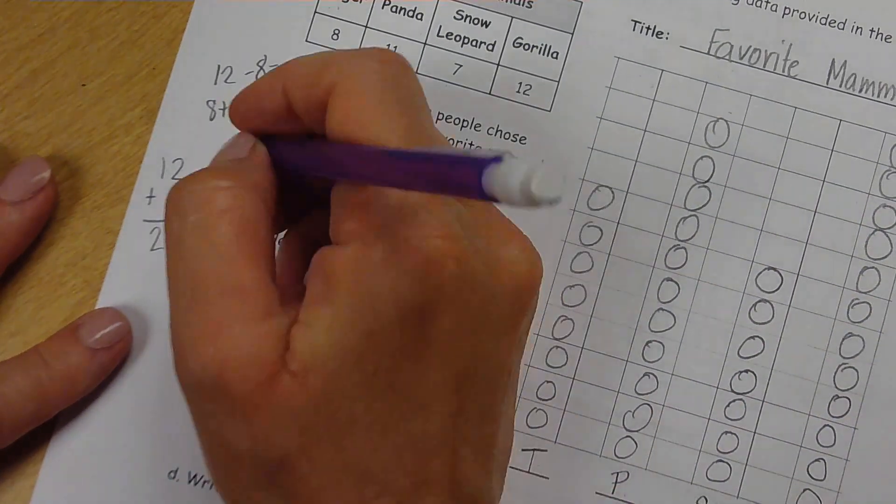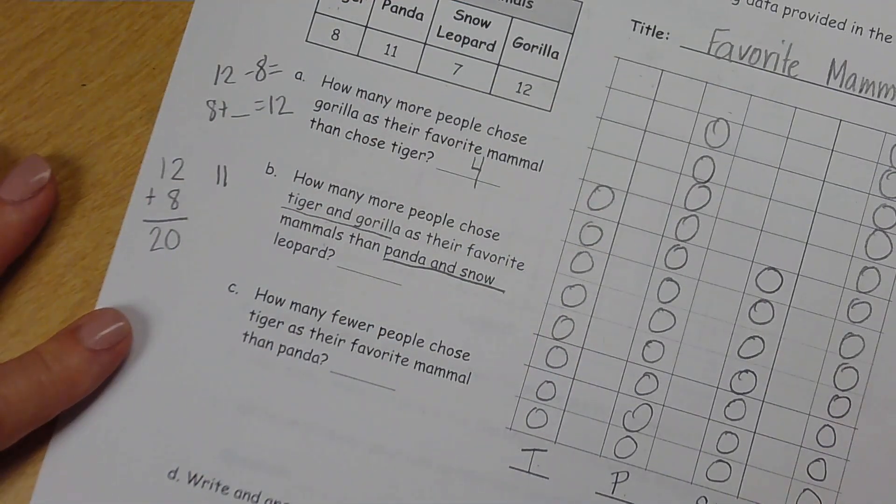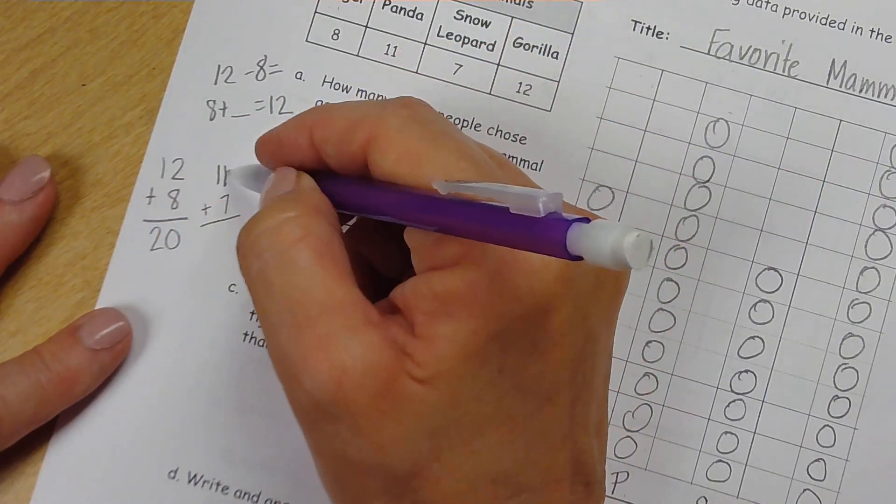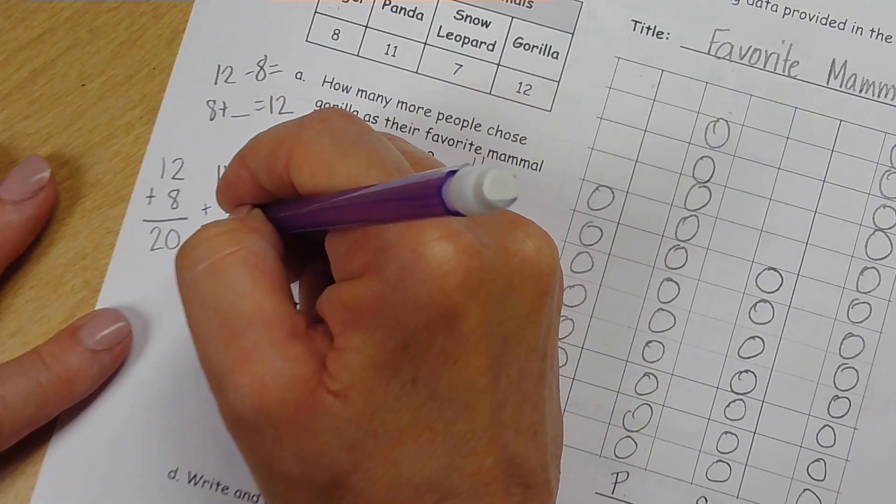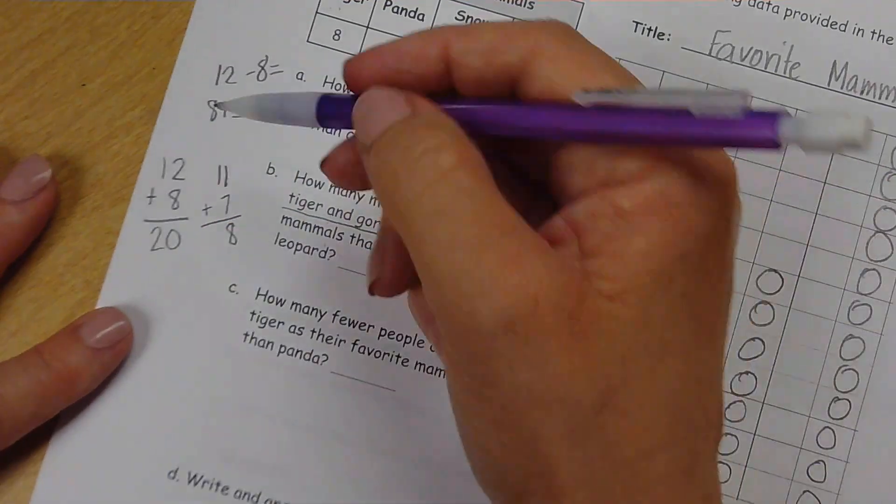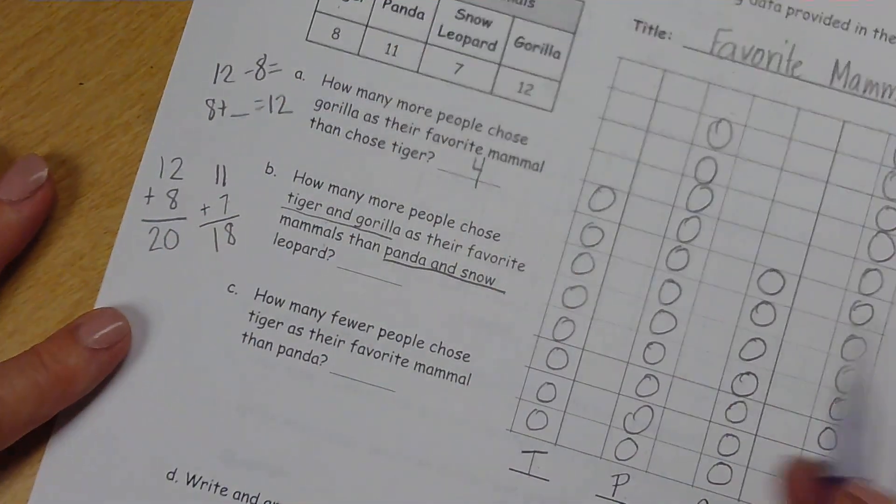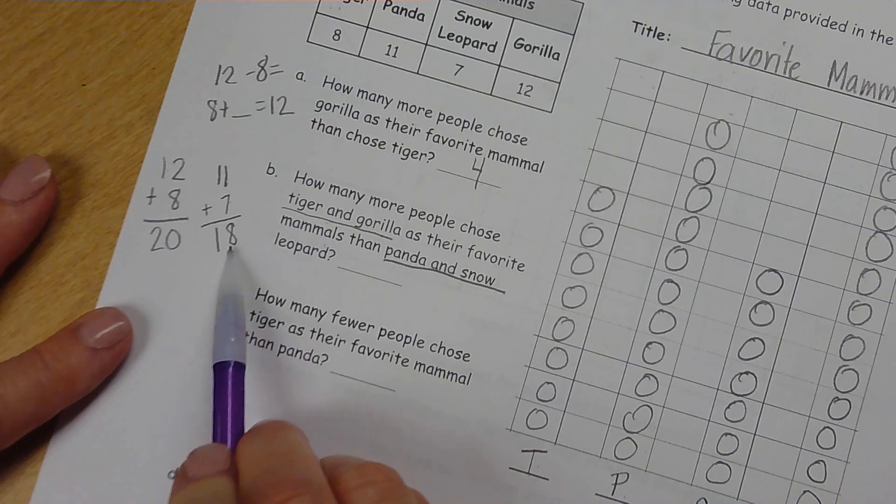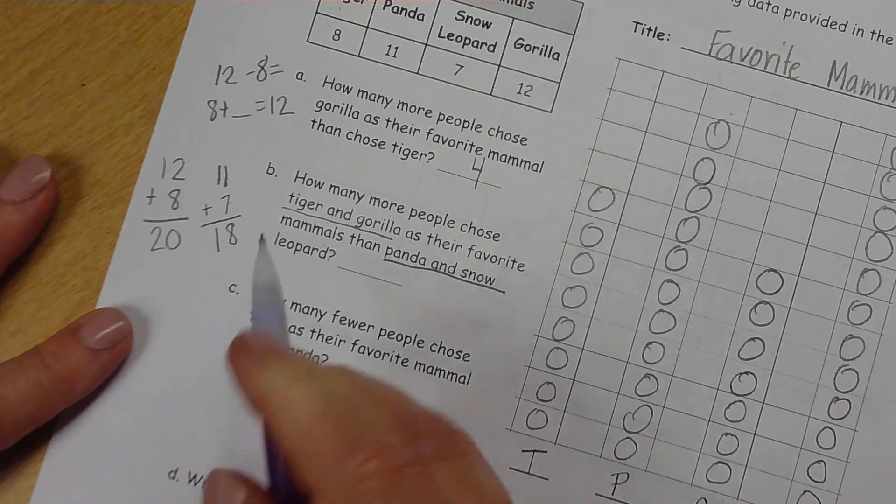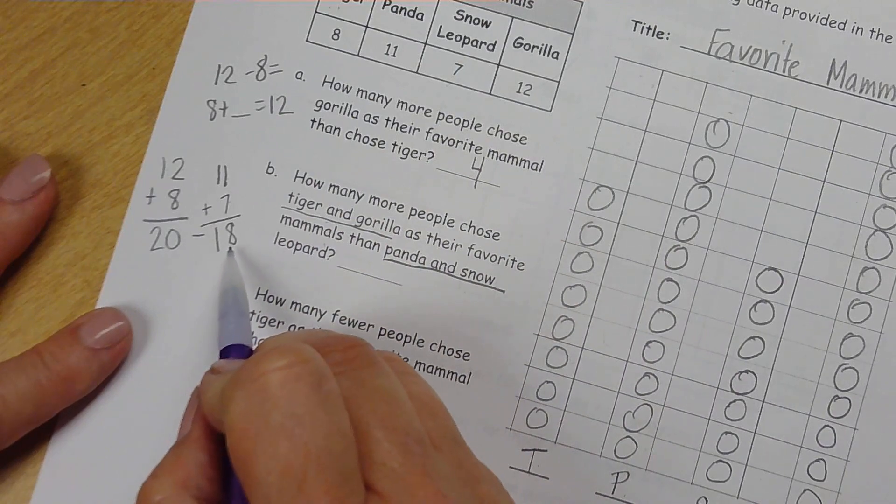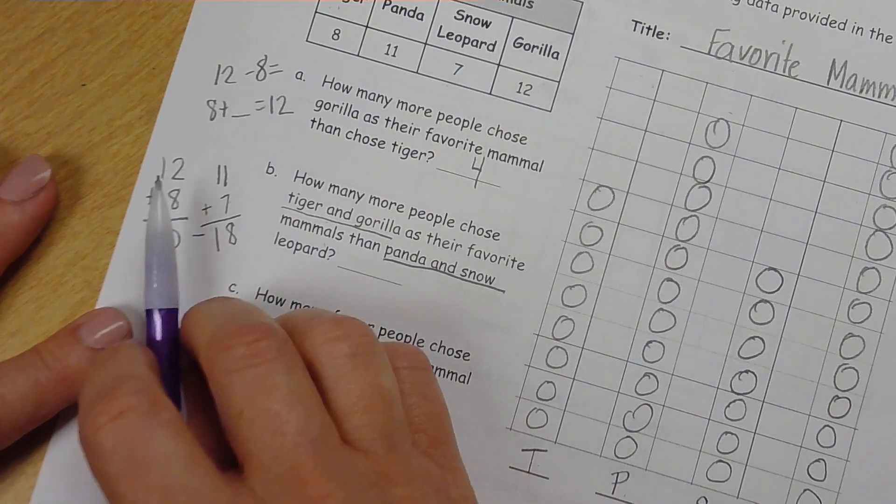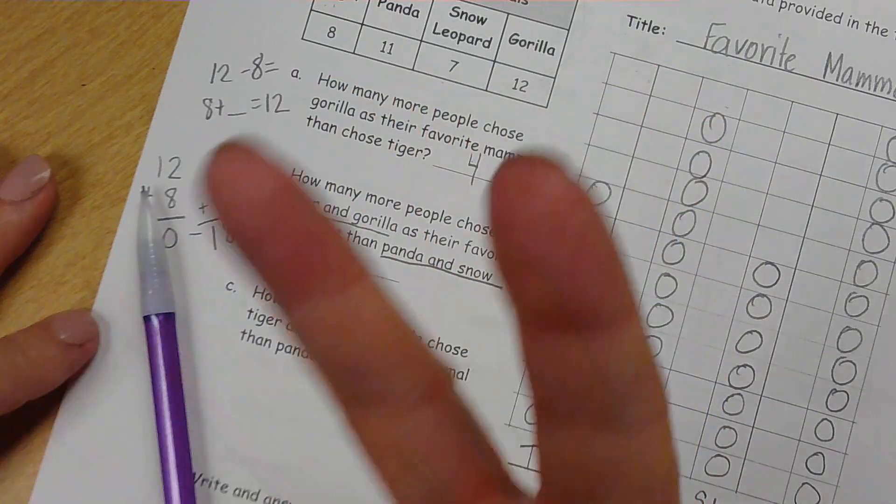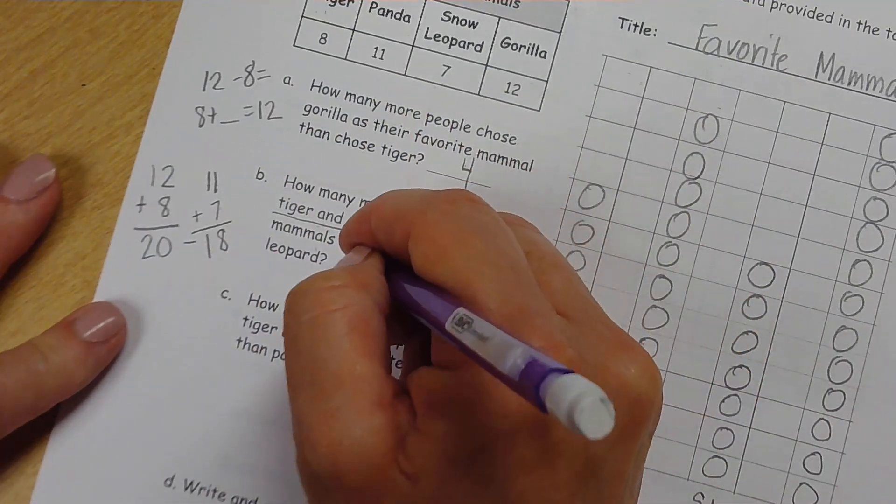Panda had 11 and snow leopard has 7. We are going to add our ones together. 7 and 1 is 8. We didn't make a 10, so we are not going to move that over. And then there is one 10 there. So panda and snow leopard is 18. Tiger and gorilla is 20. What is the difference between these two numbers? How many more do I need to add to 18 to get 20? 18, 19, 20. We added 2. If you subtract 18 from 20, you would also get 2.